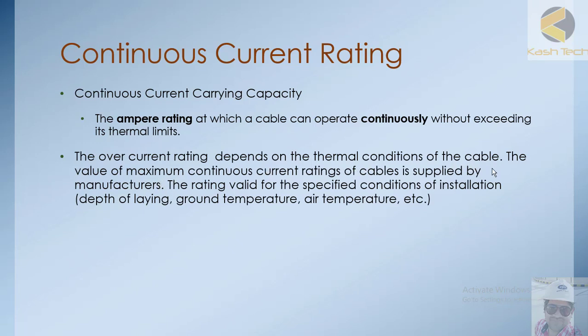The over-current rating depends on the thermal condition of the cable. The maximum continuous current rating is supplied by the manufacturer for specific installation conditions — depth of laying and ground temperature also affect the rating. For example, if a cable is continuously rated for 10 amperes but is bundled with 10 or 20 other cables, you cannot take 100% of that capacity. The cable capacity must be reduced by applying certain derating factors to find the actual real rating.